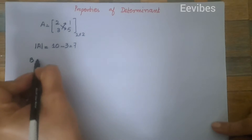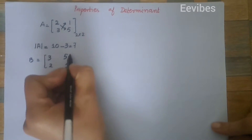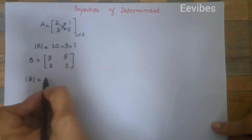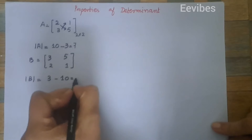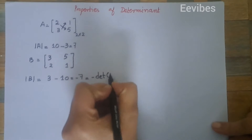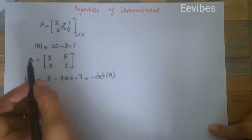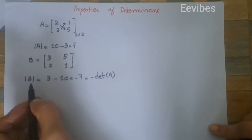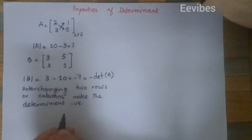Now let's assume there is another matrix B which is obtained by swapping the rows of A, so B is equal to [[3, 5], [2, 1]]. If I find the determinant of this new matrix B, it equals three minus ten, which is equal to minus seven. We can also say this is equal to the negative of the determinant of A. So we conclude that when we interchange any two rows or columns of a matrix, the determinant becomes negative. This is the first property of the determinant.